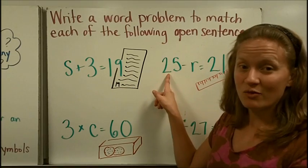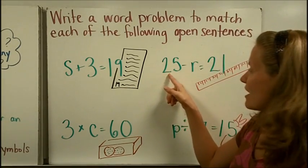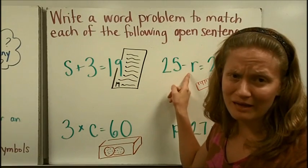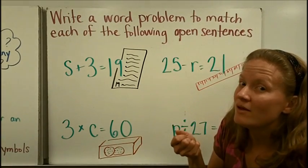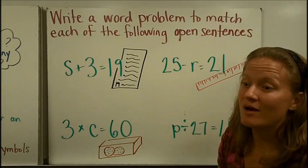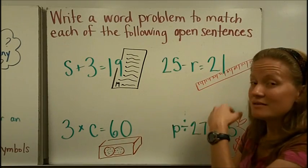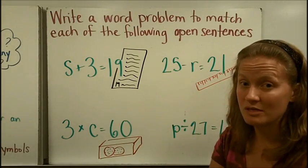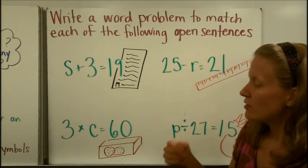Let's say that I started with 25 rulers. I knew I had at the beginning of the year 25 rulers. And then I let Mr. E borrow some, but I didn't happen to see how many he took. It was an unknown amount. He just grabbed some out. Well, I have 21 rulers now left in my bucket. And I can write this open sentence and then solve for R to find out how many rulers he took. So R would be the amount of unknown rulers that Mr. E borrowed.